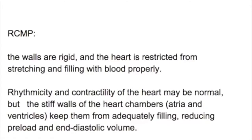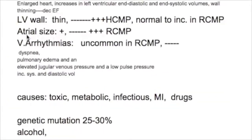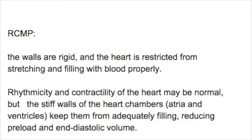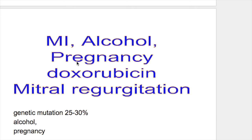There is atrial hypertrophy in all three cardiomyopathy types, but it is massively increased in restrictive cardiomyopathy. Ventricular arrhythmias are uncommon in restrictive cardiomyopathy, and it produces a low voltage ECG.